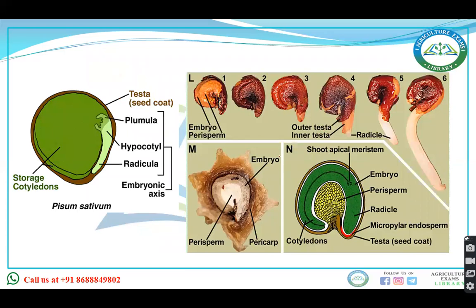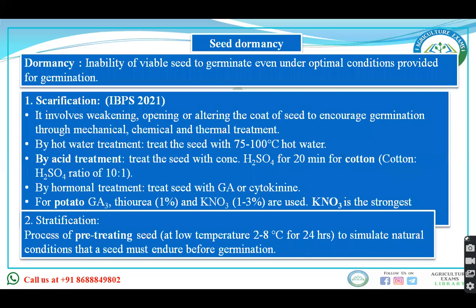Now moving to dormancy. Seed dormancy is the inability of a viable seed to germinate under normal conditions. There are three types: innate or primary dormancy, enforced dormancy, and induced or secondary dormancy.